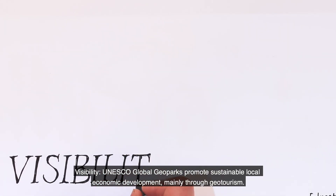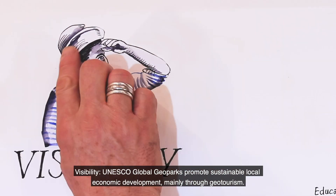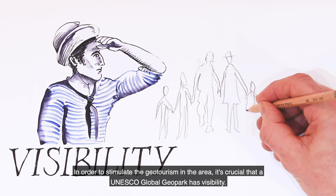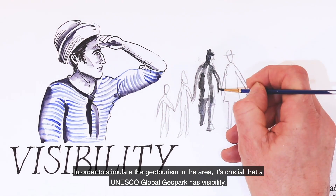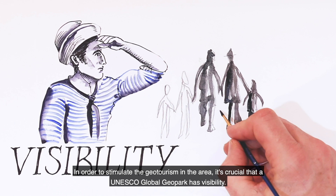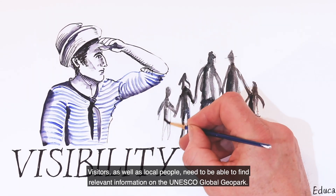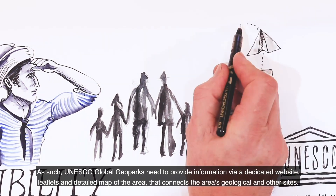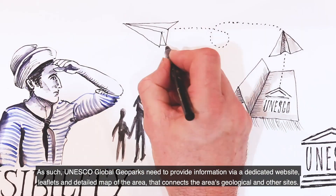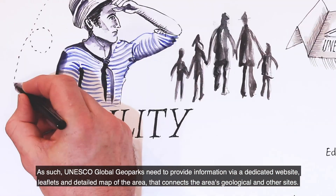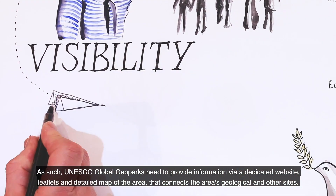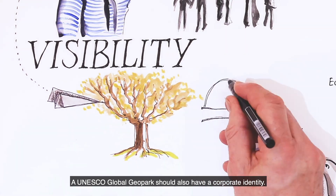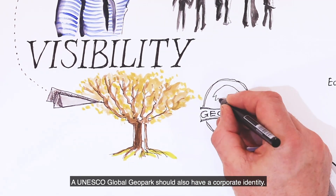Visibility. UNESCO Global Geoparks promote sustainable local economic development mainly through geotourism. In order to stimulate geotourism in the area, it's crucial that a UNESCO Global Geopark has visibility. Visitors as well as local people need to be able to find relevant information. As such, UNESCO Global Geoparks need to provide information via a dedicated website, leaflets, and a detailed map of the area that connects the geological and other sites. A UNESCO Global Geopark should also have a corporate identity.